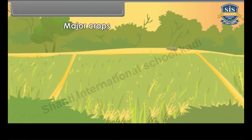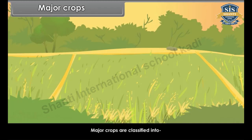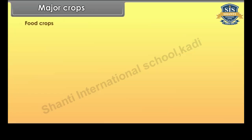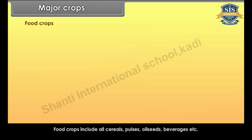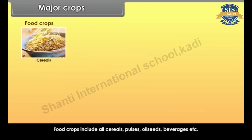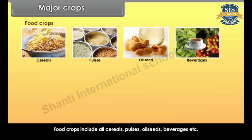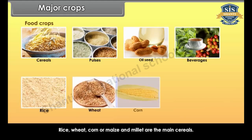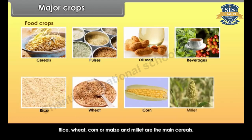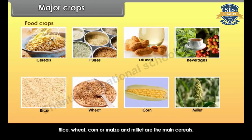Major crops are classified into food crops, commercial crops and beverage crops. Food crops include all cereals, pulses, oil seeds, beverages, etc. Rice, wheat, corn or maize and millet are the main cereals.